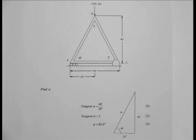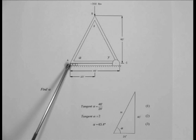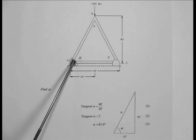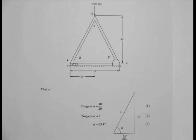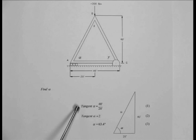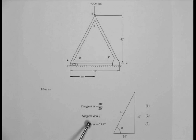In solving step one of our problem, we will begin to determine the dimensions of the various parts of our triangular truss. To begin with, we will find the angle alpha. This angle is most easily determined by noting that the height of the triangle is 40 feet and the base of the triangle is 20 feet. The tangent of the angle alpha is then 40 feet divided by 20 feet, or 2. We then determine the angle alpha to be 63.4 degrees.